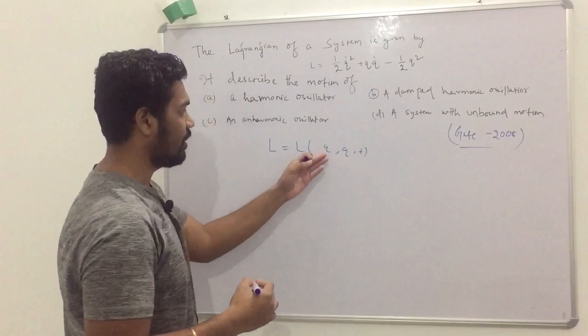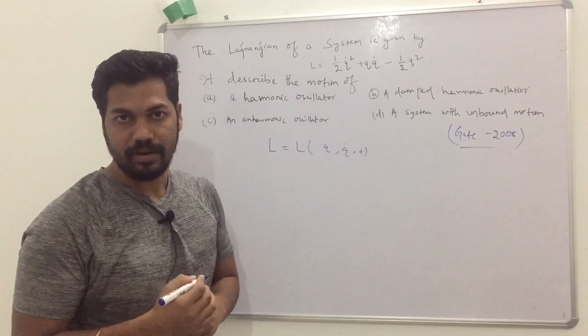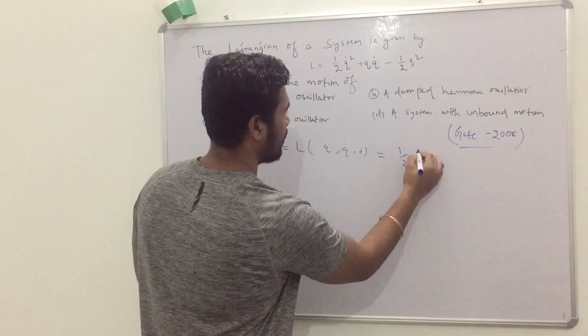Here Q is your generalized coordinate, Q dot is your generalized velocity, and T is time. So this Lagrangian is given to you: half Q dot squared plus Q Q dot minus half Q squared.